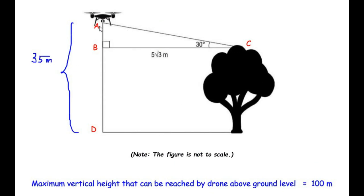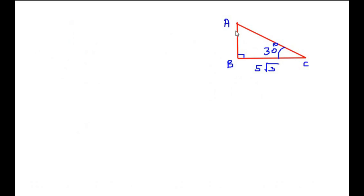The total height of the drone from the ground is 35 meters. I have labeled the diagram with points A, B, C, and D. We need to find the height of the tree, which is BD, and we'll call it h. BC is given, BD we need to find, and the angle of elevation is 30 degrees. Let us concentrate on right angle triangle ABC. BC is 5√3 — that is the horizontal distance. The angle of elevation is 30 degrees, and we are trying to find AB. The side opposite to 30 degrees is AB, and the side opposite to 90 degrees is the hypotenuse.